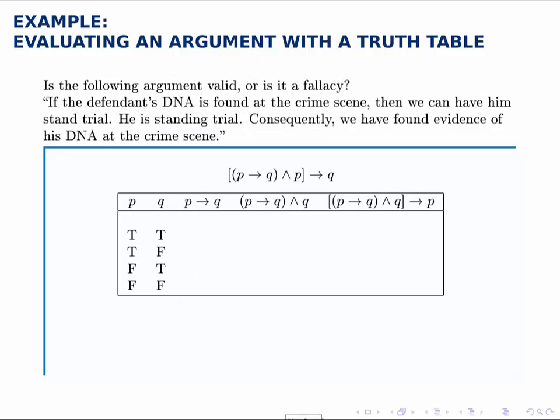The truth table looks like this, where we have columns building up to the final argument, and we just fill them in using the rules that we know. P implies Q is true except for the case where P is true and Q is false. P implies Q and Q, we combine the second and third columns. The rule for and is that it's true if both are true and false otherwise.